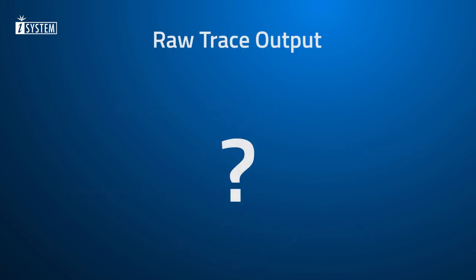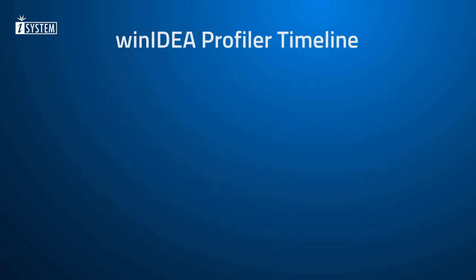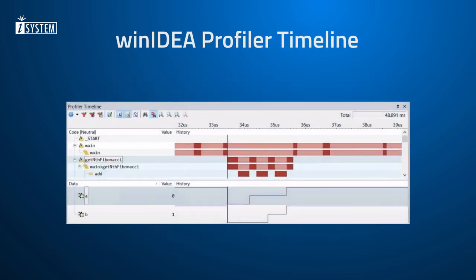Now, what does raw trace output look like in WinIDEA? It shows you trace sample numbers, associated addresses, raw data, the decoded data in a readable form, and the corresponding timestamp information for each trace item. When traced events are uploaded and displayed, it's time to present this data in a more readable way in the WinIDEA profiler timeline. This presentation method is called profiling.